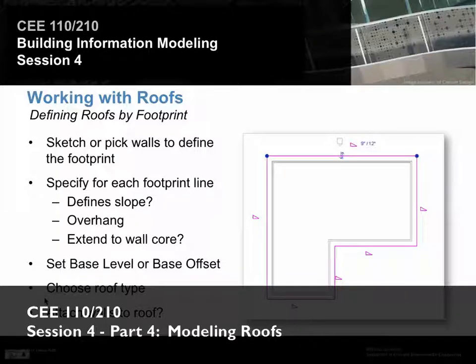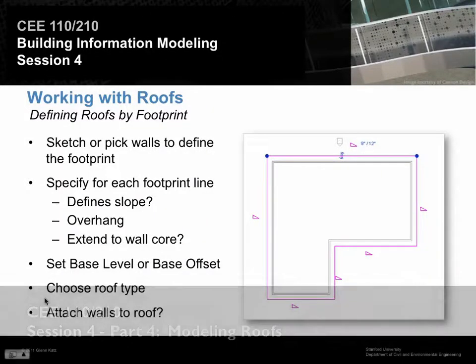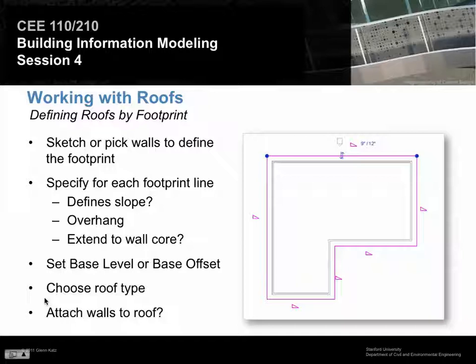We played around with roofs just a little bit last time. The fundamental thing we did was sketching a floor. When we sketched the floor, we had the whole question of whether we'd have an overhang — whether it would extend beyond the wall or stay right to the core — really where that pink line should be relative to the wall surfaces. We also had the notion of which side determines the slope.